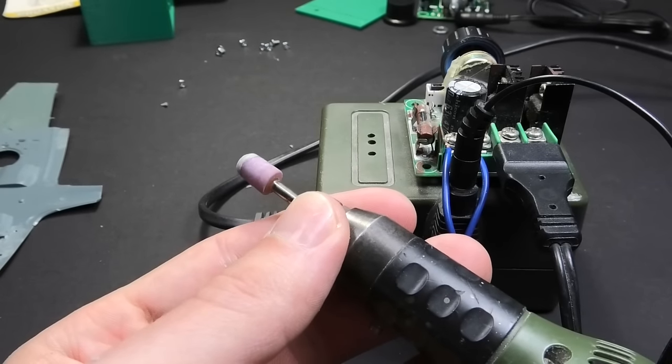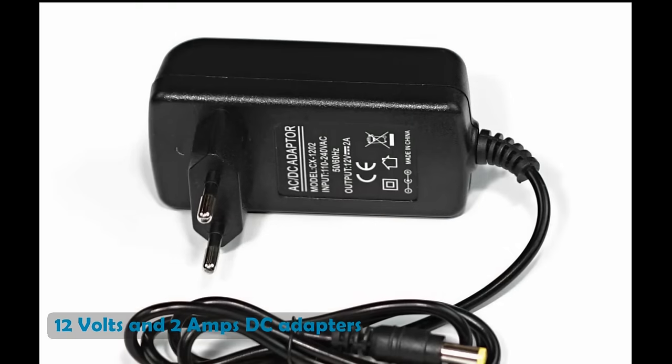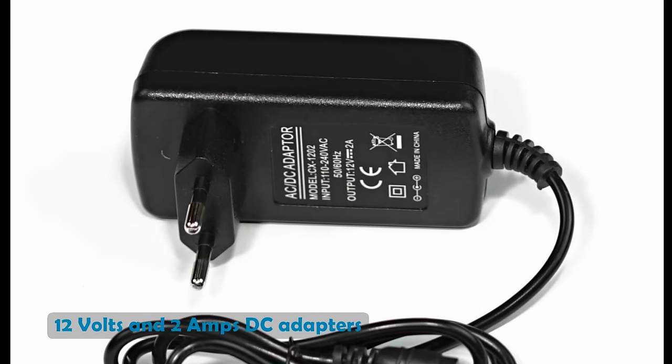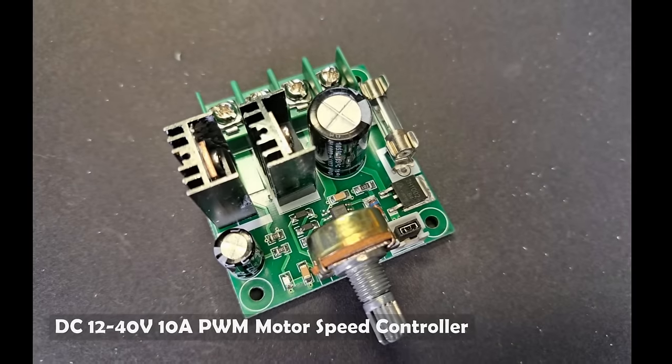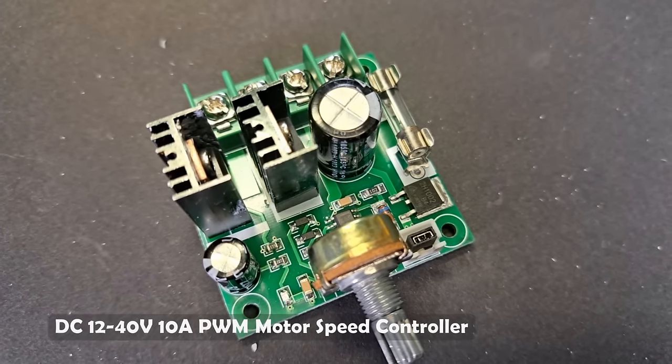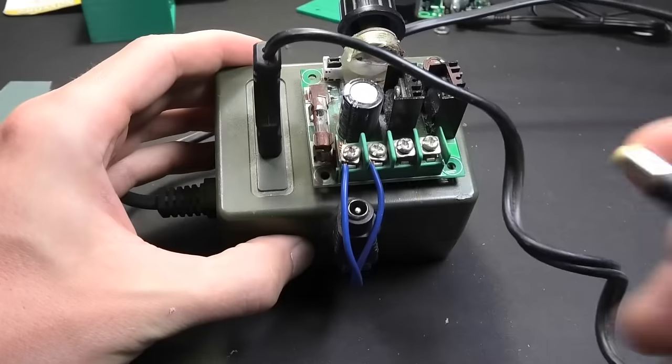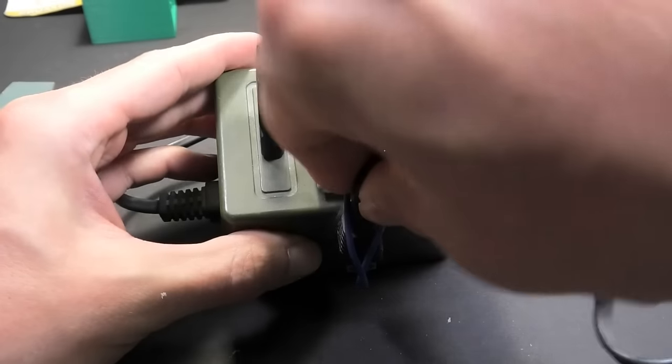You need for this project a DC adapter with 12 volts and 2 amperes, and a controller board with pulse-width modulation. It costs roughly $2. You can find it on eBay, Aliexpress, or some other shops.